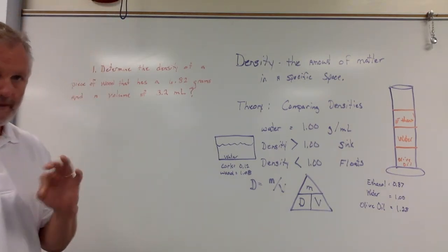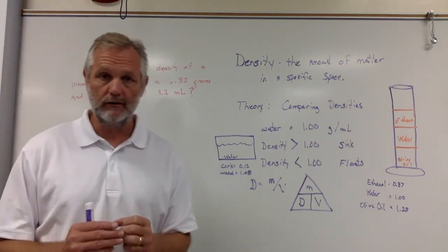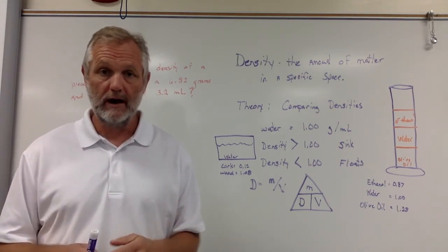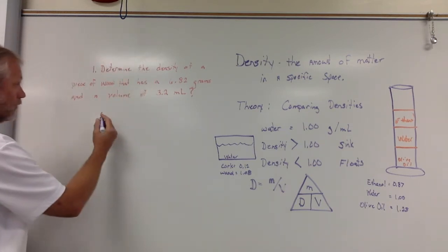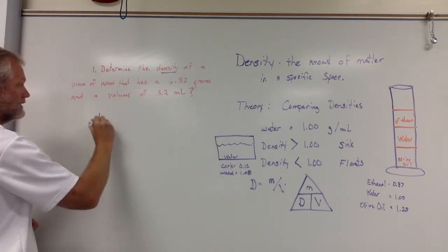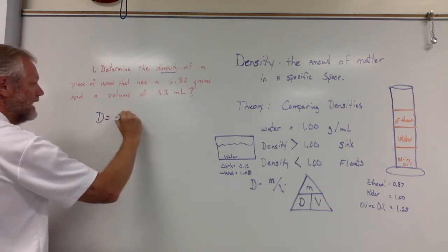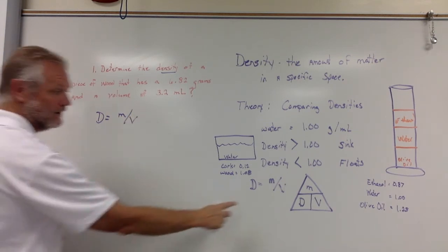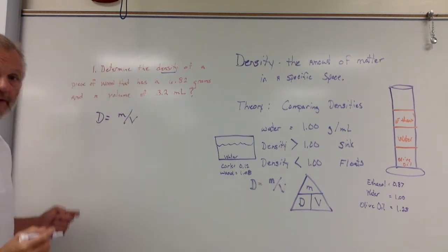Last thing that I want to do is I want to work a problem for you. When we do word problems, there are three things that you must include. Number one, the formula that you're using. So I am going to determine density. So I'm going to say density is equal to mass divided by volume. That's my formula. So that's the first thing.